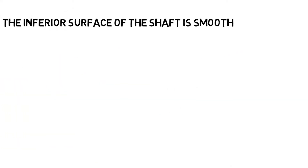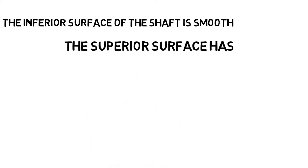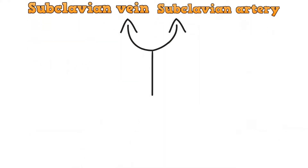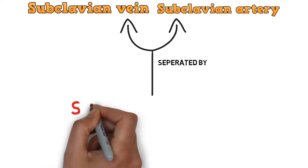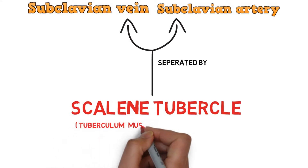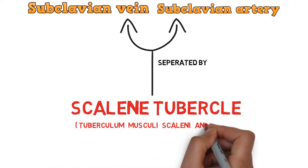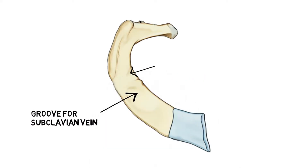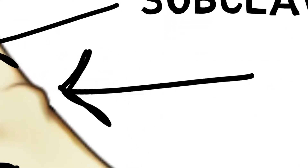The inferior surface of the shaft is smooth. The superior surface has grooves for the subclavian vein and subclavian artery. These grooves are separated by a tubercle called the scalene tubercle — Latin name: tuberculum musculi scalene anterioris. This is the groove for the subclavian vein, this is the groove for the subclavian artery, and these are separated by the scalene tubercle.